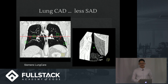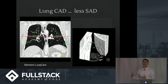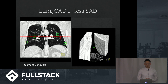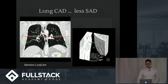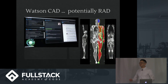Lung care is less sad. Lung CAD uses these algorithms to look for lung cancer, especially if you're smoking a pack a day for about 20 years — you should definitely be getting a lung screening. We're looking for little nodules throughout the lung which might be cancer. There are non-cancerous nodules and cancerous ones, and this technology has been progressing and getting much better. This is a Siemens lung care system. Watson CAD is potentially exciting.